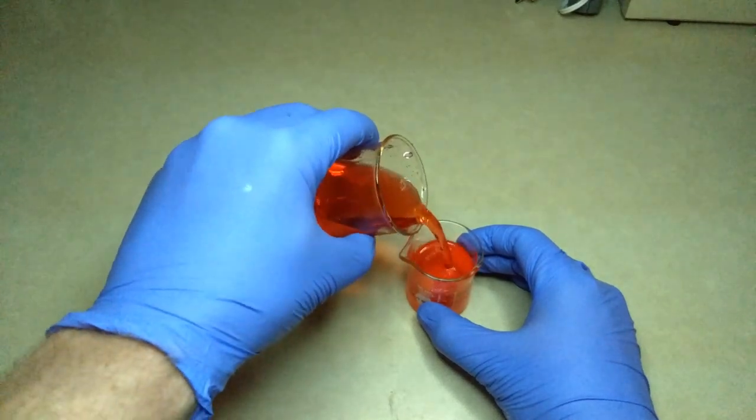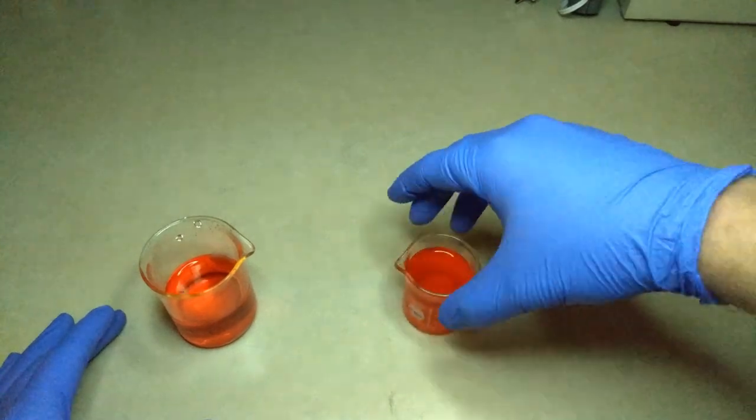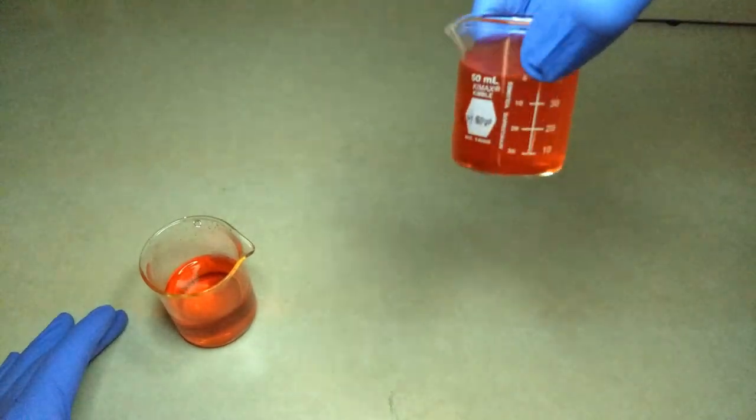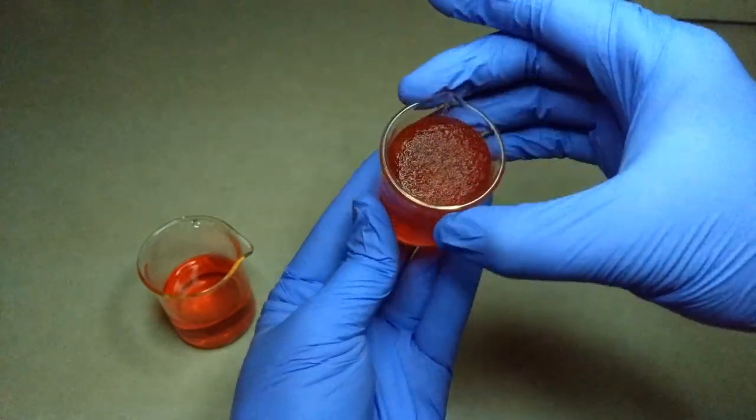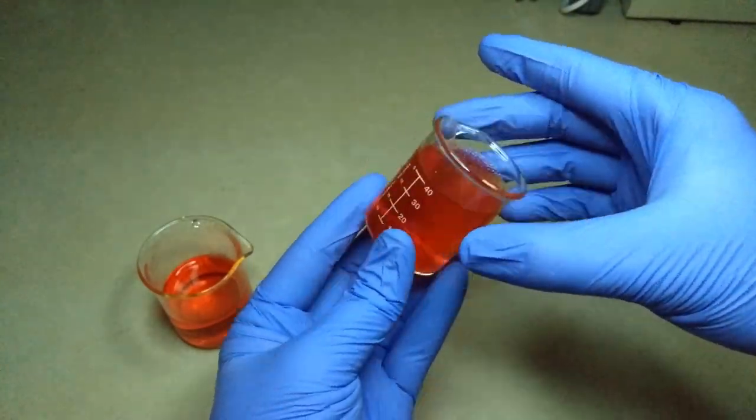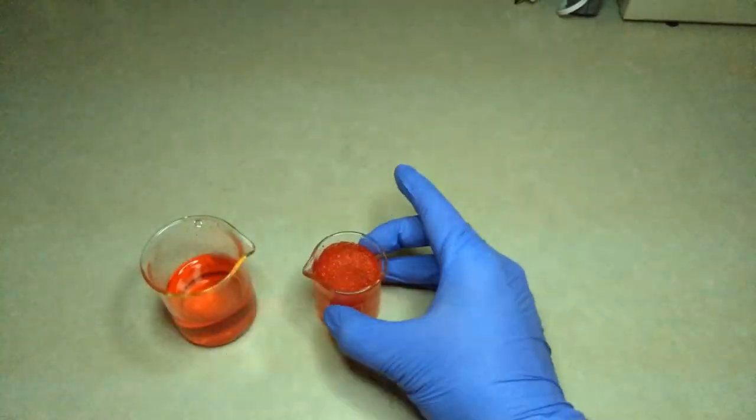So if we add a bunch more water, a hundred times the volume of the original solid polymer, it will absorb all of that. And if I swish it around for another minute, that all incorporates into the structure and generates this semi-solid material that doesn't slosh.